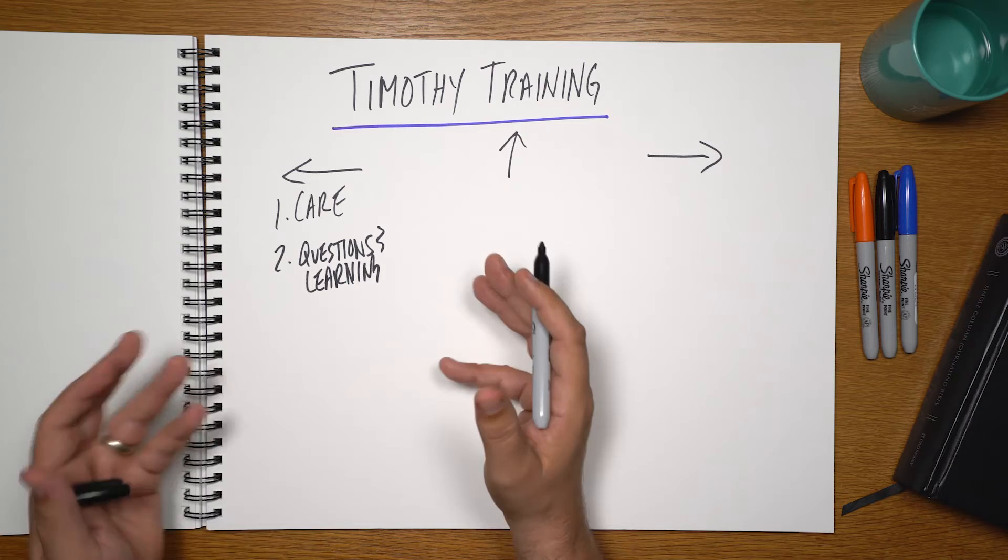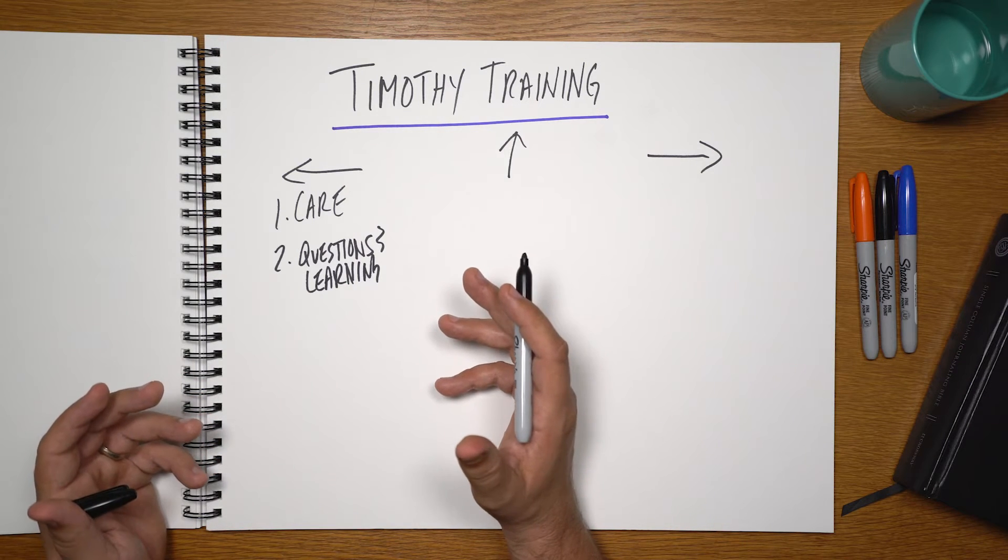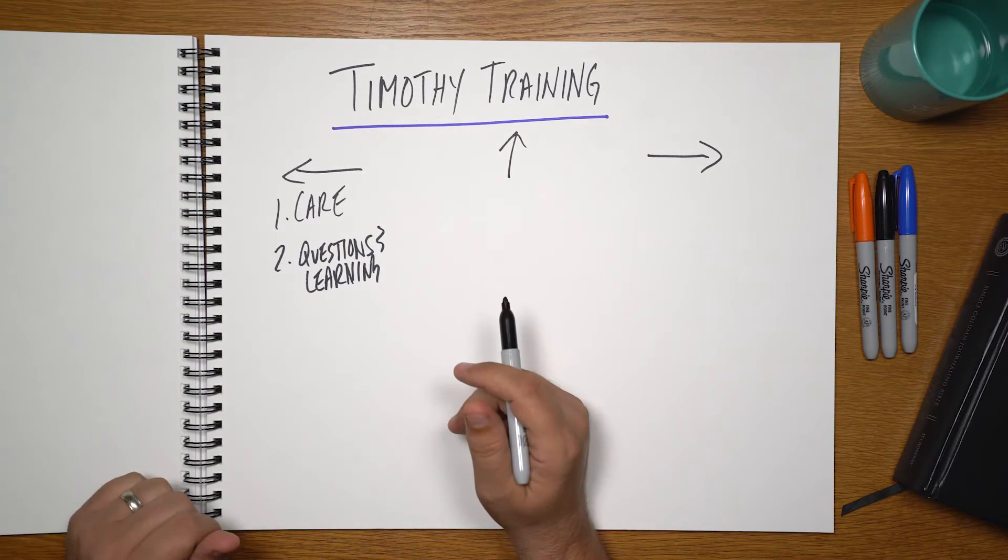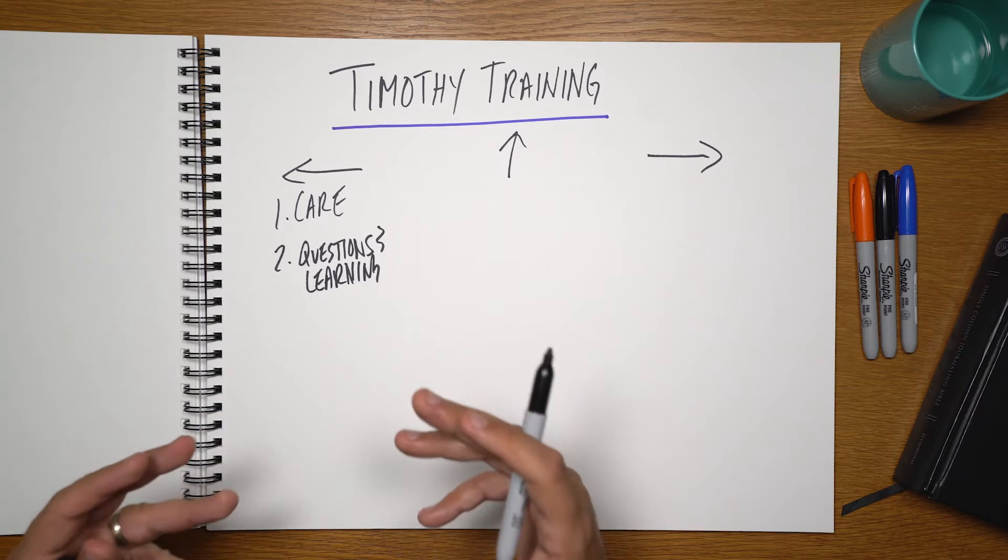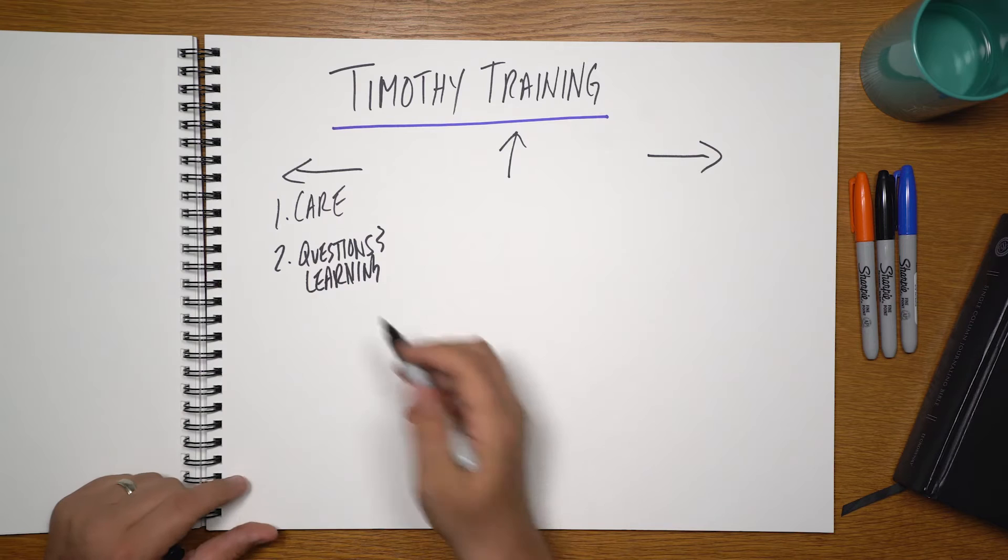We typically do the Timothy training, if possible, with two to three people because they begin to learn together in community. If you've only got one, one-on-one is great. But if you've got more, two to three is what we found an ideal size for a team, and so it's a good size for Timothy training.